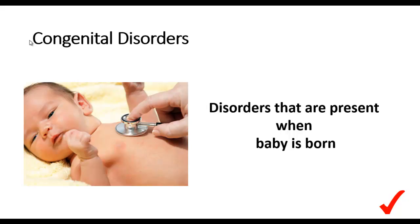A congenital disorder is one that is passed down from a baby's parents. Some examples of this are Down syndrome and Fragile X. Down syndrome isn't a disease that one catches — it has to do with genetics and chromosomes and things of that nature, thus making it a congenital disorder.